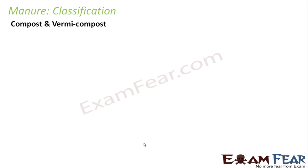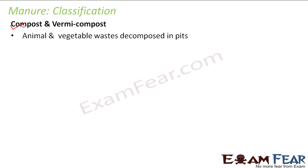Now let us look at the classification of manure. There are two types of manures available. The first one is compost and vermicompost. Compost is prepared by decomposing animal and vegetable wastes in pits — a pit is like a well dug in a place where you deposit all the animal and vegetable wastes, mix them together with some water, and in due course of time they decompose and form manure. This process of preparing manure is known as composting.